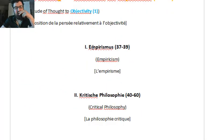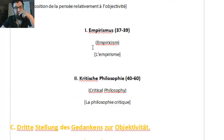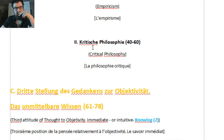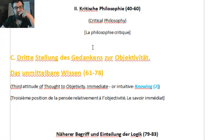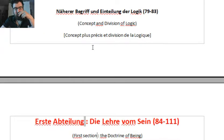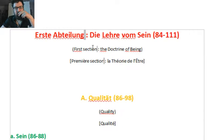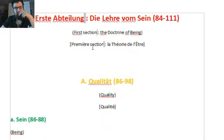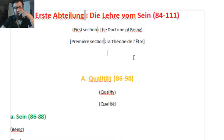Then there is the empirical consideration, the view of the critical philosophy which is the view of Kant. And finally the immediate knowing, or the intuitive knowing, which is maybe the view of Schelling or what we call the mystics. Here is the Erste Abteilung, the Lehre von Sein. I have not put the numbers of the whole process, only the paragraphs. These are the paragraphs of the Encyclopedia.